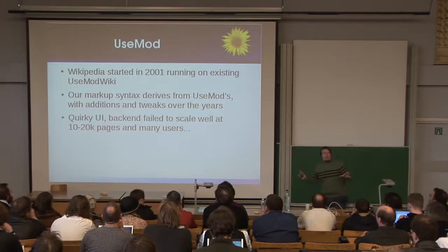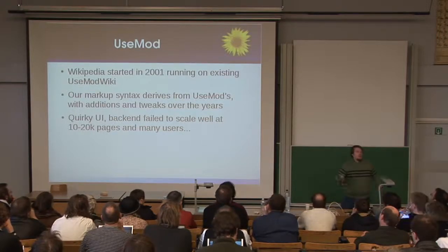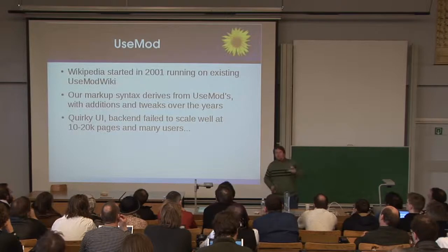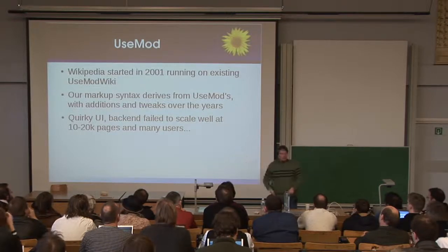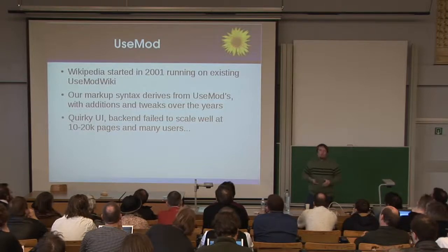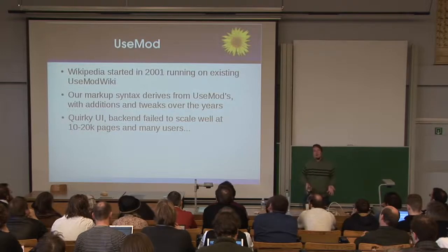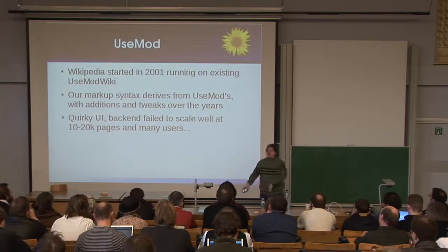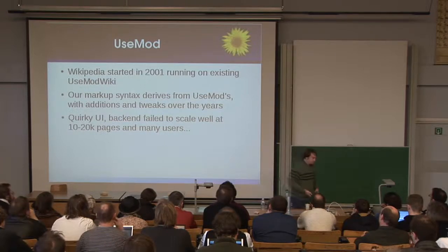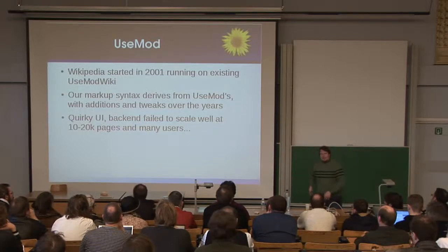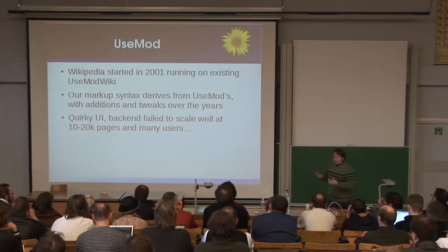Back to software. Way back in 2001, we actually started using a pre-existing wiki engine called UseModWiki. The wonderful thing about UseMod is it's really easy to install — it's a single Perl script. Put it on your server, set it up as CGI, have a directory you can write to, and you've got a wiki. For better or worse, our markup has derived from the UseMod system, so we have these quirky ways of doing bold, italic, and links. We've maintained pretty much compatibility with that over the years, though it's kind of weird, and we've extended it in fun, bizarre ways to add tables and templates.